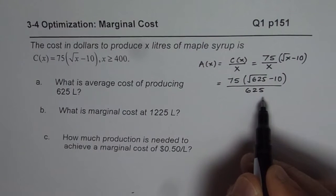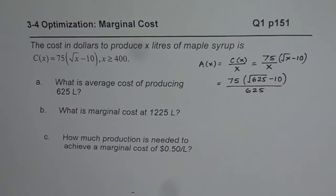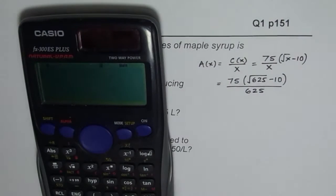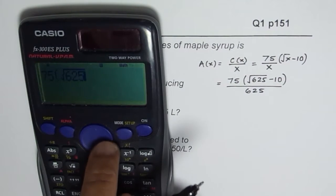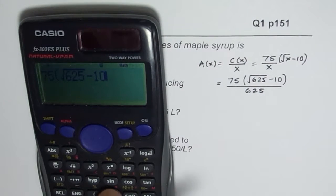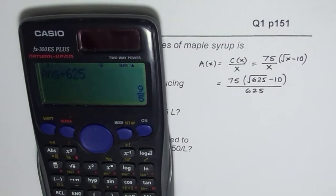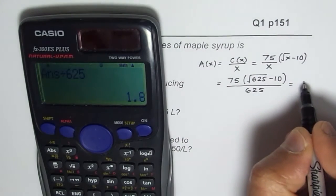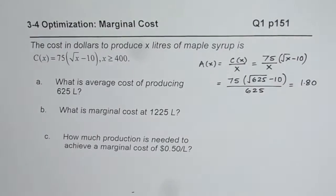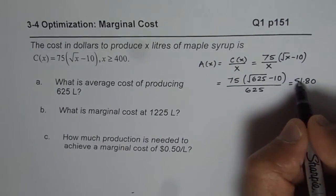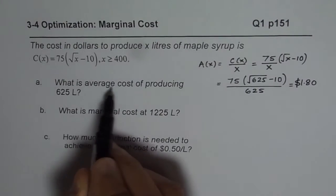Once you substitute, you can use a calculator to find the answer. We have 75 times the square root of 625 minus 10, divided by 625. In decimals that equals 1.80. So the average cost is $1.80 — and all these costs are in dollars.